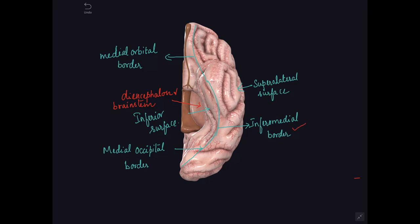The infromedial border separates the medial surface from the inferior surface. This border is interrupted by the diencephalon and the brainstem into a medial orbital border and an occipital border.